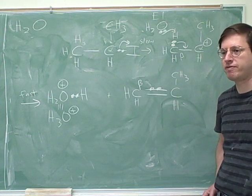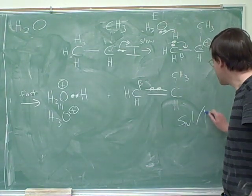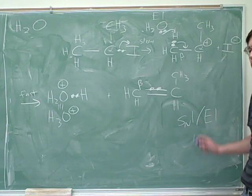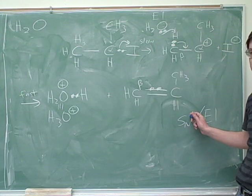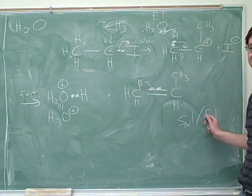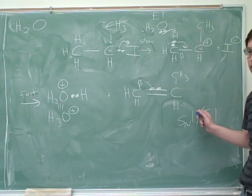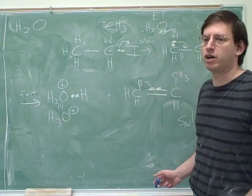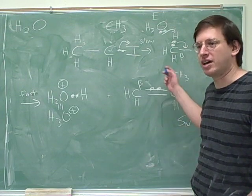Everything about the reaction is explained by what favors the rate determining step. That's why when you looked at the handout, it said SN1/E1. Anytime the conditions are good for SN1, they're probably going to be good for E1, because they both have the same rate determining step. The big obstacle to SN1 is stabilizing the carbocation — and that's also the big obstacle to E1. Since they both have the same obstacle, anything that's good for one is usually good for the other, so you usually get a mix of SN1 and E1 products.